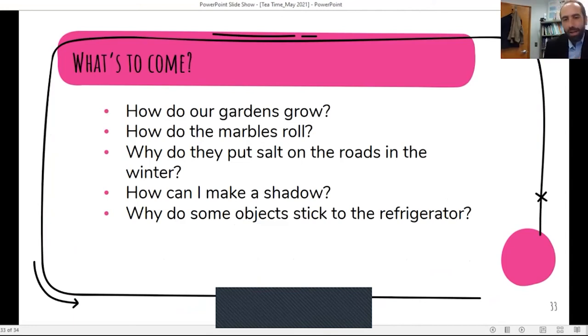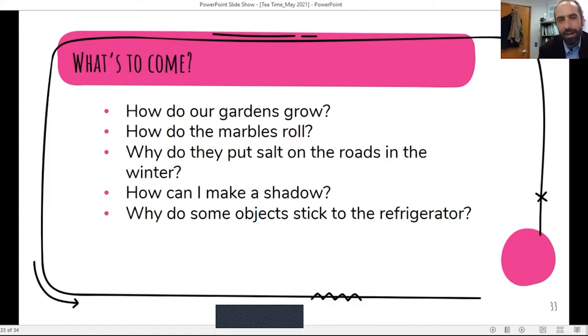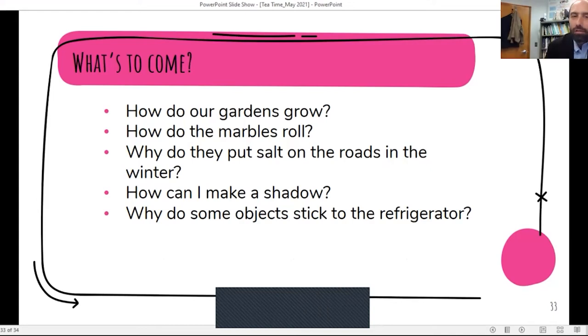Okay. So what's to come? I have a lot of things planned for this summer. So the two examples today were just to give you a feel for what explore before explain looks like and how you can scale it up or down, depending on the content that you want to hit. But this summer, we're going to look at how do our gardens grow? So it's definitely a life science topic, an investigation that takes a couple days, but teaches some very fundamental things about the needs of seeds and the needs of plants. We'll do some physics with how do marbles roll? We'll look at some chemistry, and definitely a topic that's relevant to Colorado and here in St. Louis. Why do they put salt on the roads in the winter? We're going to explore how can I make a shadow? And then lastly, why do some objects stick to the refrigerator? Okay. So I have a lot planned for this summer and I'm super excited to share these ideas.